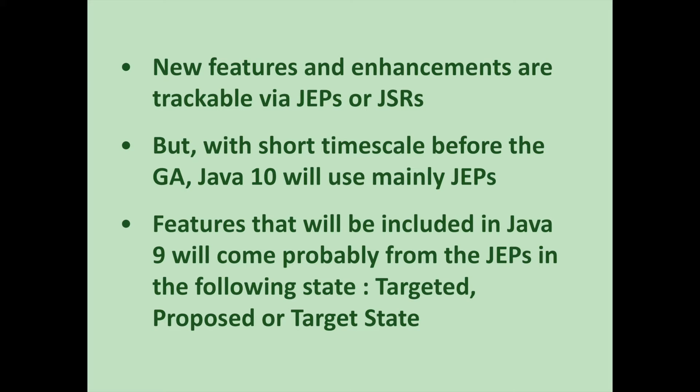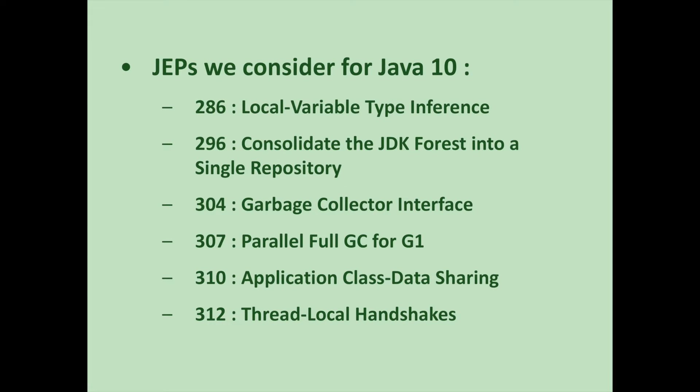New features and enhancements are tracked through either the Java Enhancement Process, as JEP, or through the Java Community Process for standardization requests, as JSR. With a short time scale and accordingly small scope, Java 10's changes will be arriving as JEPs and can be tracked via their JEP number. The features that Java 10 seems most likely to contain are those with JEPs currently in targeted or proposed-to-target state. Currently, this consists of the following features.